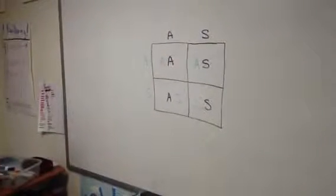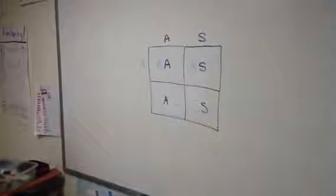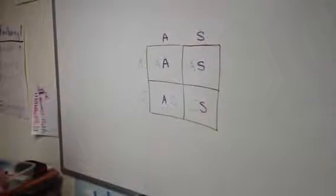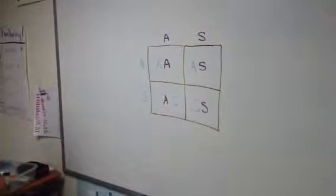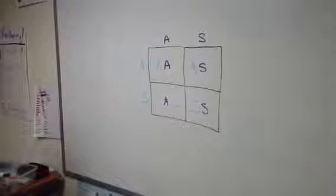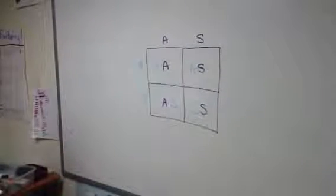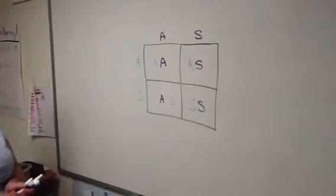This is Punnett Square, and right now it just looks like a bunch of crazy letters inside some boxes. But today we're going to talk about how this genetic picture actually helps you understand what the chances are of your children having sickle cell trait or sickle cell disease.